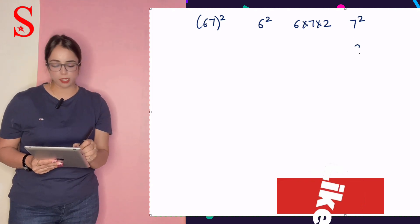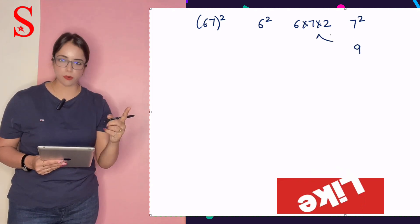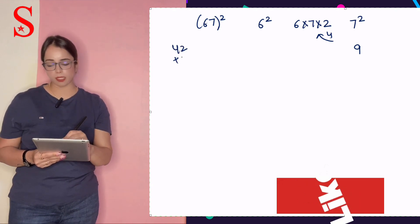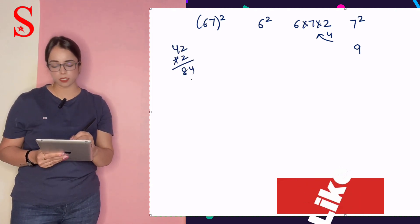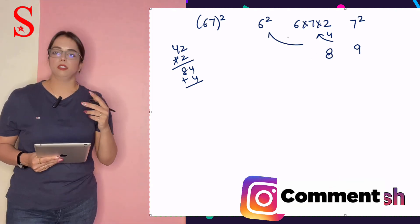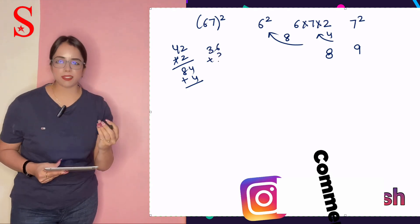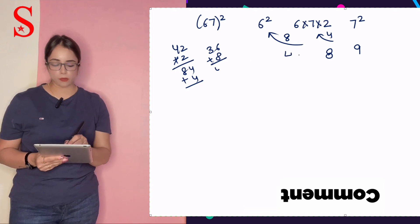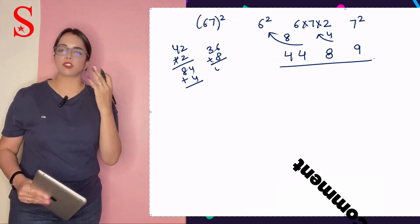7 square is 49. 4 carry to the next row. Now, 6 into 7, 42. 42 into 2 is 84. 84 plus 4, 88. We'll write 8 here. 8 to the next row. Now, 6 square is 36. 36 plus 8, that is 44. What is the answer? 4, 4, 8, 9.